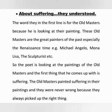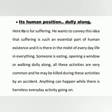About suffering, they were never wrong, the old masters, how well they understood. The word 'they' in the first line refers to the old masters, because he is looking at their paintings. These old masters are the great painters of the past, especially from the Renaissance time — for example, Michelangelo and others. The poet is looking at their paintings and the first thing he comes up with is suffering. The old masters painted suffering in their paintings and they were never wrong because they always picked up the right thing — it's the human position.